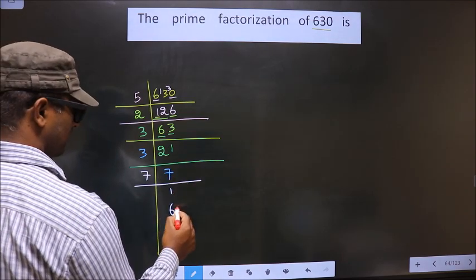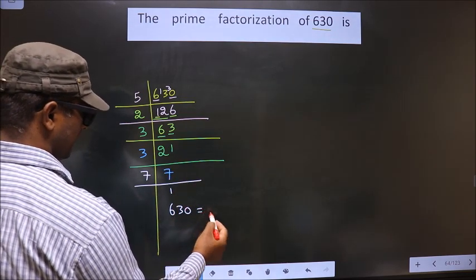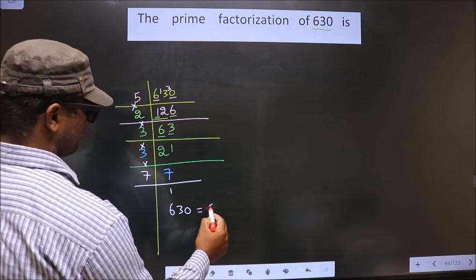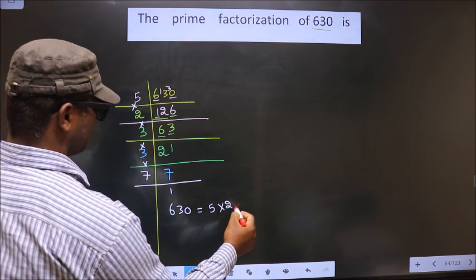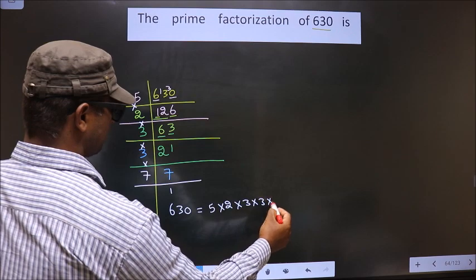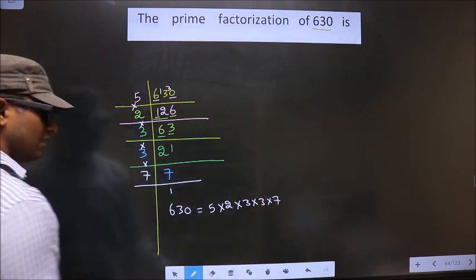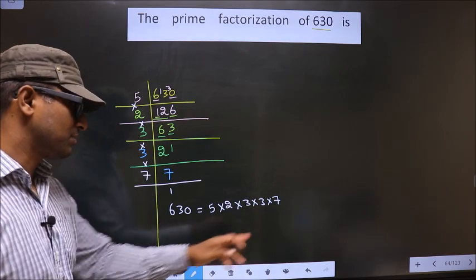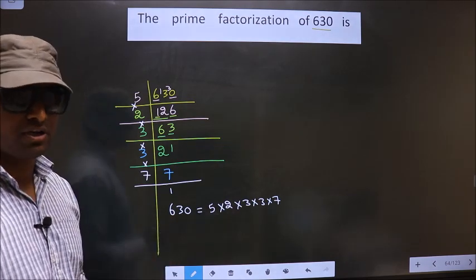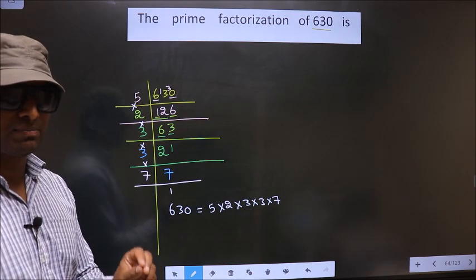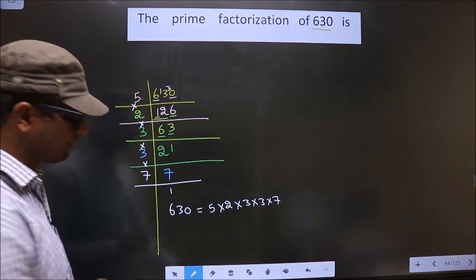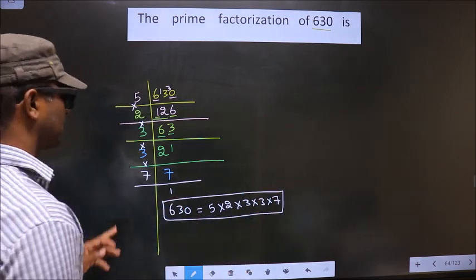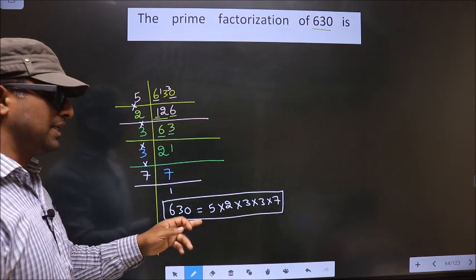So, prime factorization of 630 is you put into symbol between them. That is 5 into 2 into 3 into 3 into 7. So this is the prime factorization of 630. This also called as product of prime numbers of 630. So this is our answer. Am I clear?